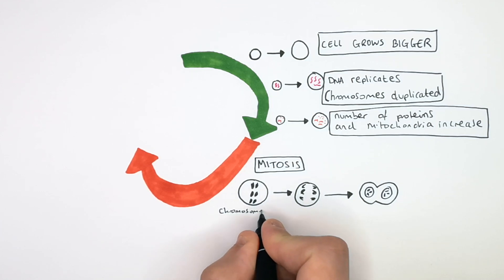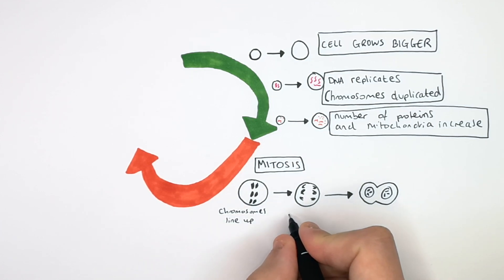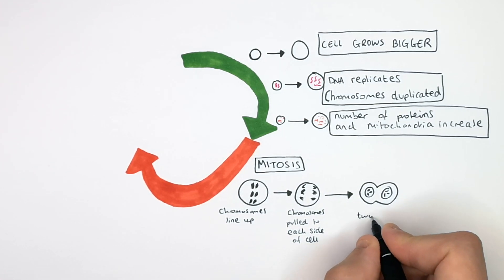So remember, the chromosomes line up in the middle of the cell. The chromosomes are then pulled to each side of the cell. Then two nuclear membranes form around the chromosomes.